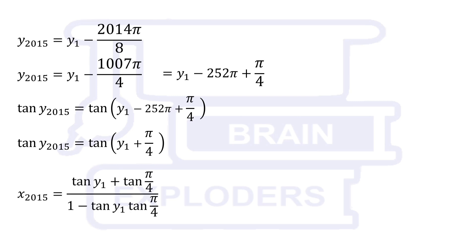Tan y 2015 is equal to x 2015 by our assumption. Tan of y1 plus pi by 4 is equal to tan y1 plus tan pi by 4 over 1 minus tan y1 times tan pi by 4. Tan y1 is equal to x1, and value of x1 is given equal to 2014.